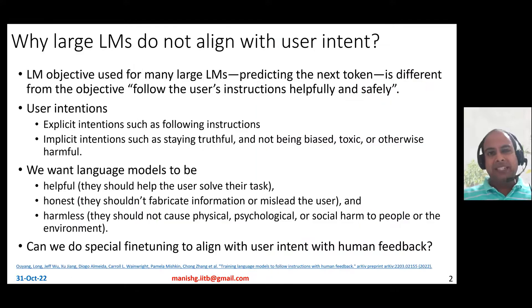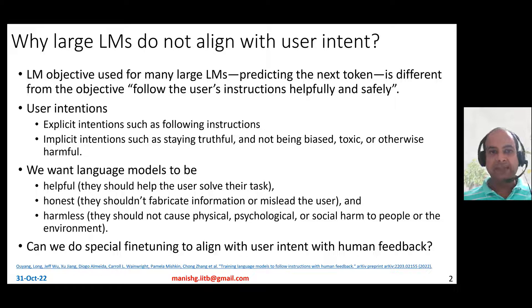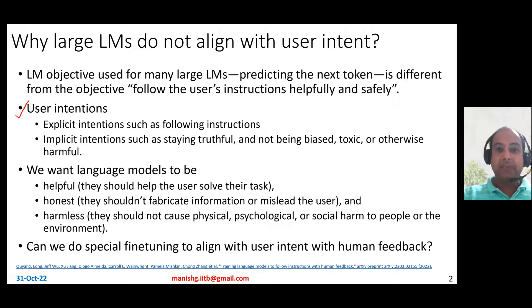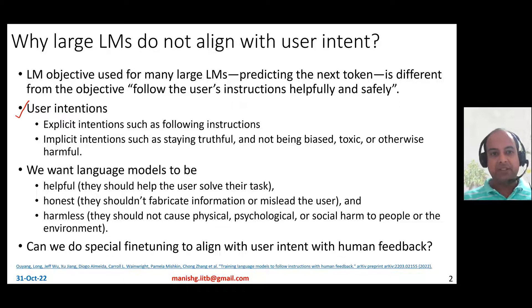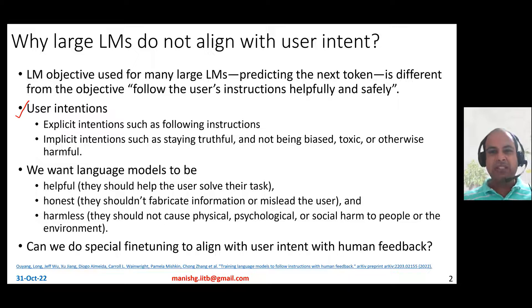The first question to ask is: why do large language models not align with user intent? By user intent, I mean explicit intents or implicit intents. Explicit intents mean following instructions, while implicit intents mean staying truthful, not being biased, toxic, or otherwise harmful or offensive in nature.